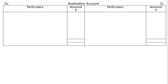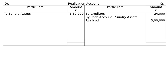We now prepare the realization account — draw the format. On the debit side: to sundry assets Rs. 1,80,000. On the credit side: by creditors Rs. 24,000, by cash account — sundry assets realized — Rs. 3,00,000. To cash account, creditors paid: the creditors stood at Rs. 24,000 and were paid Rs. 23,500 in full settlement of their claims. We total the credit side, which comes to Rs. 3,24,000, and take it to the debit side as Rs. 3,24,000, then find out the gap.